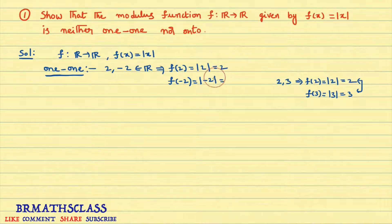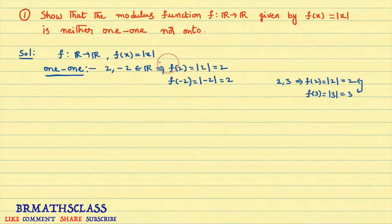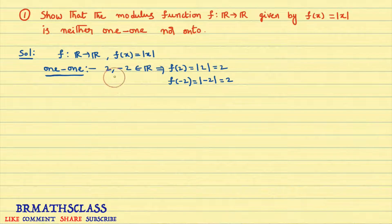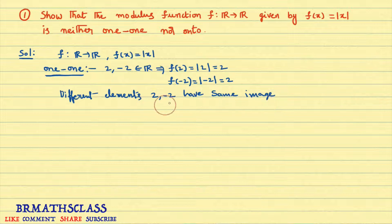Observe here: different elements 2 and -2 are having the same image. But the definition of a one-one function says different elements must have different images. Here, different elements are having the same image. That is why this function is not one-one. When the function is not one-one, this type of counter example works very well.